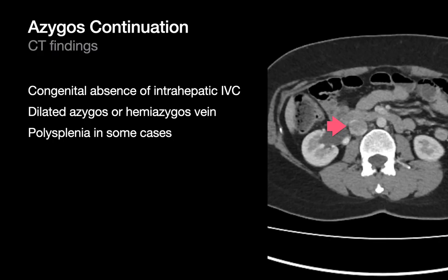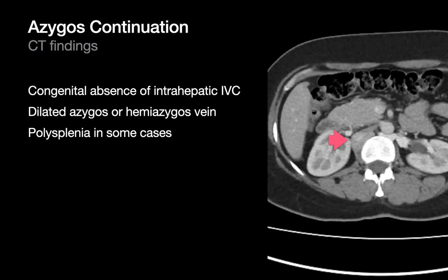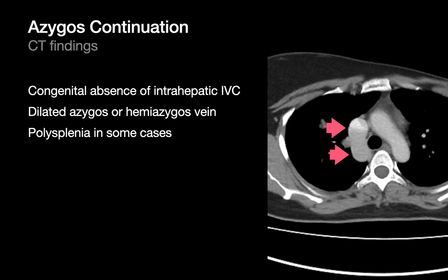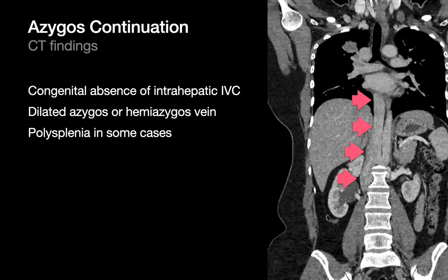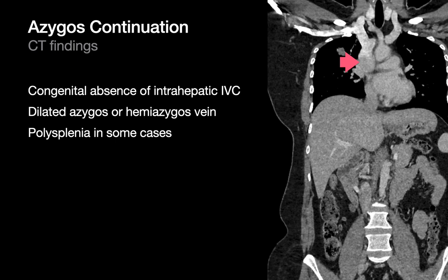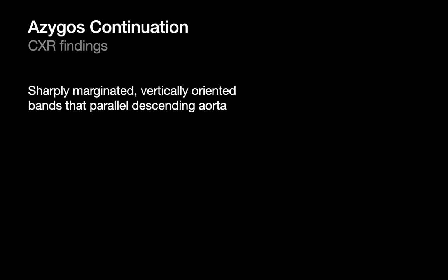In azygos continuation, a central venous anatomic variant involves the IVC. The intrahepatic IVC is absent, and venous return from the abdomen and legs doesn't return to the right atrium via the IVC. Instead, venous return occurs via the azygos or hemiazygos veins, ultimately returning to the heart via the azygos arch — which becomes quite large — and then into the SVC. On chest x-rays, the widely dilated azygos or hemiazygos veins may be visible as vertical bands that parallel the descending aorta, though this is a finding more likely seen retrospectively.